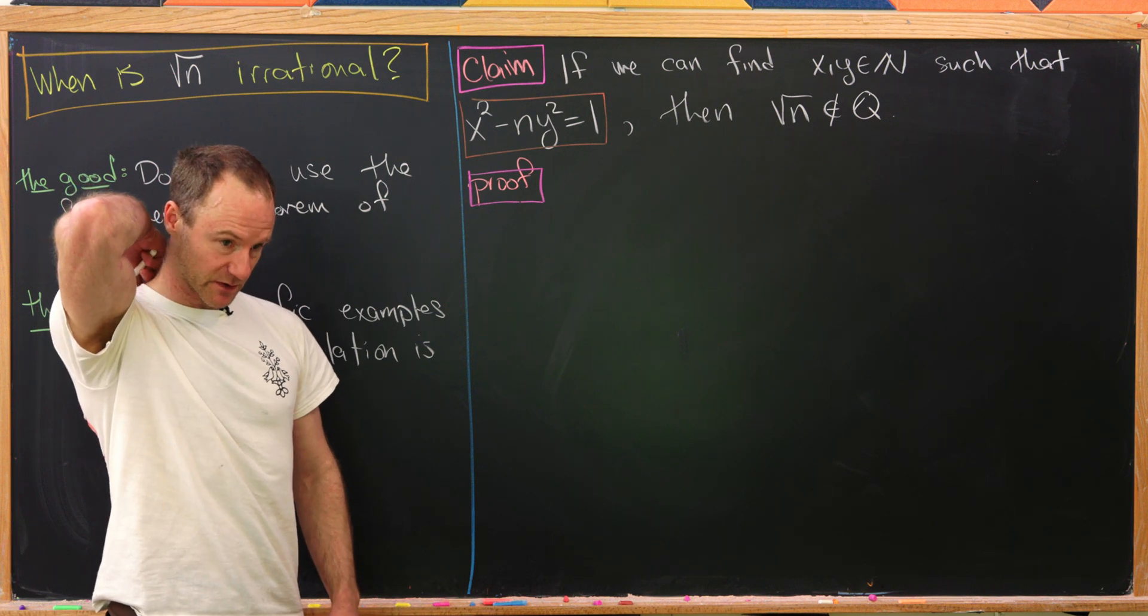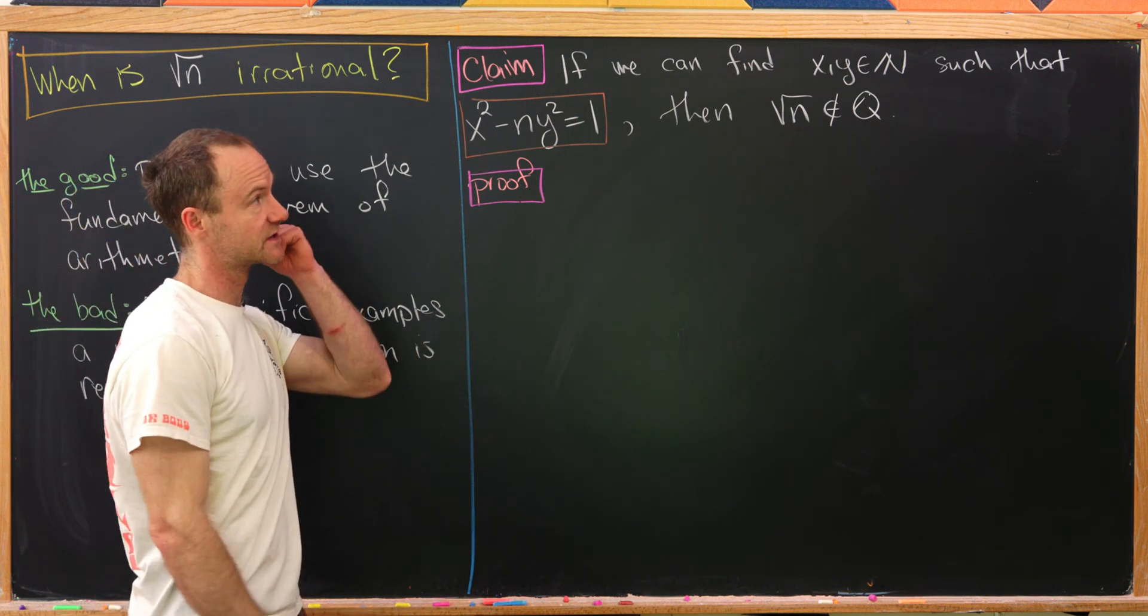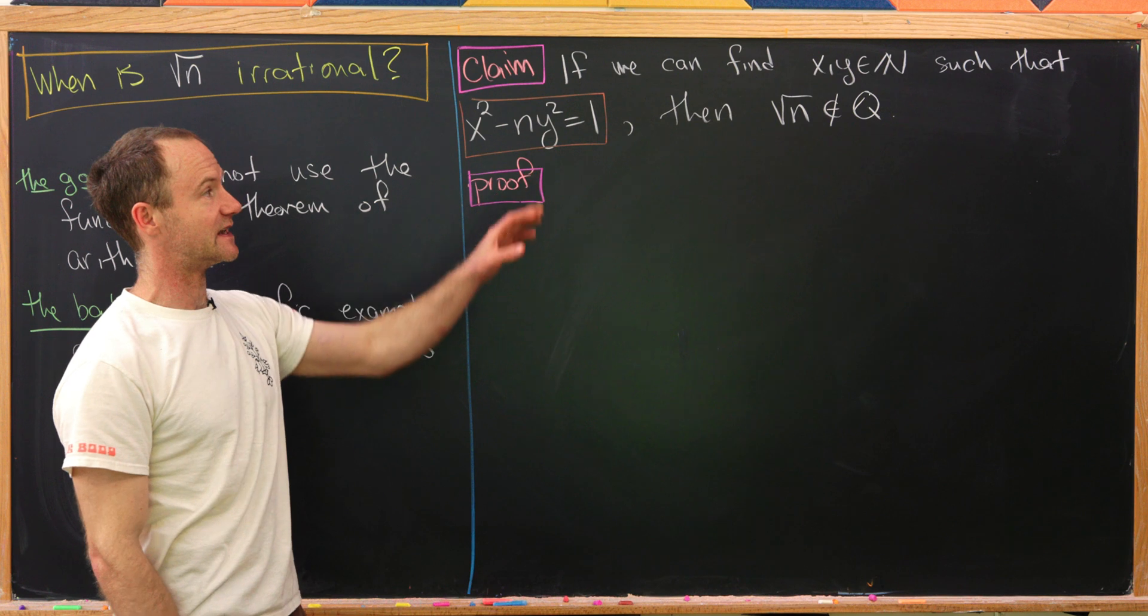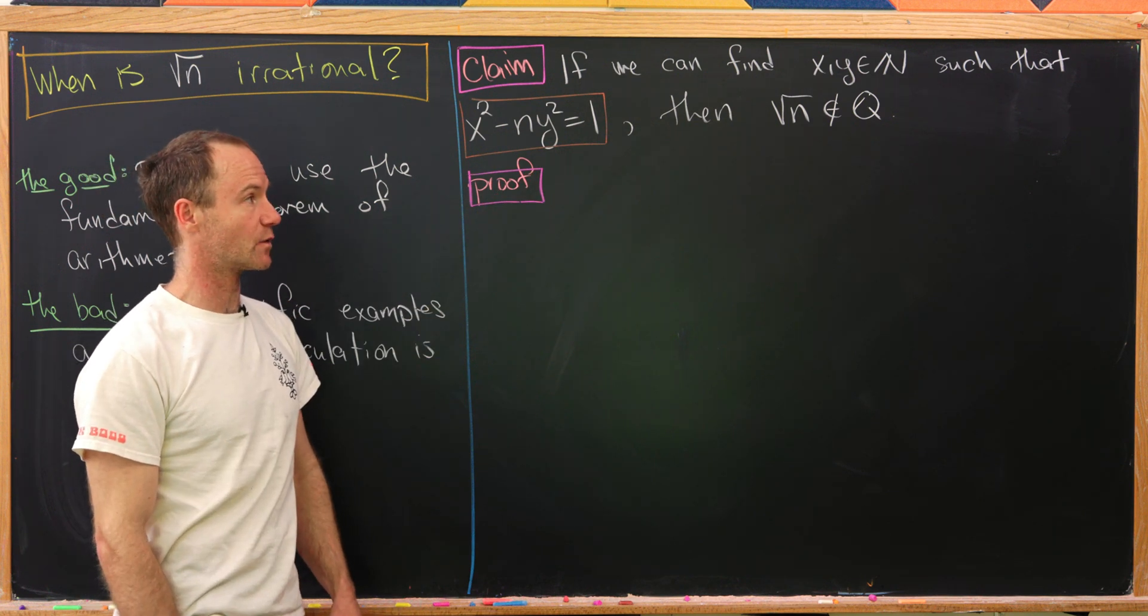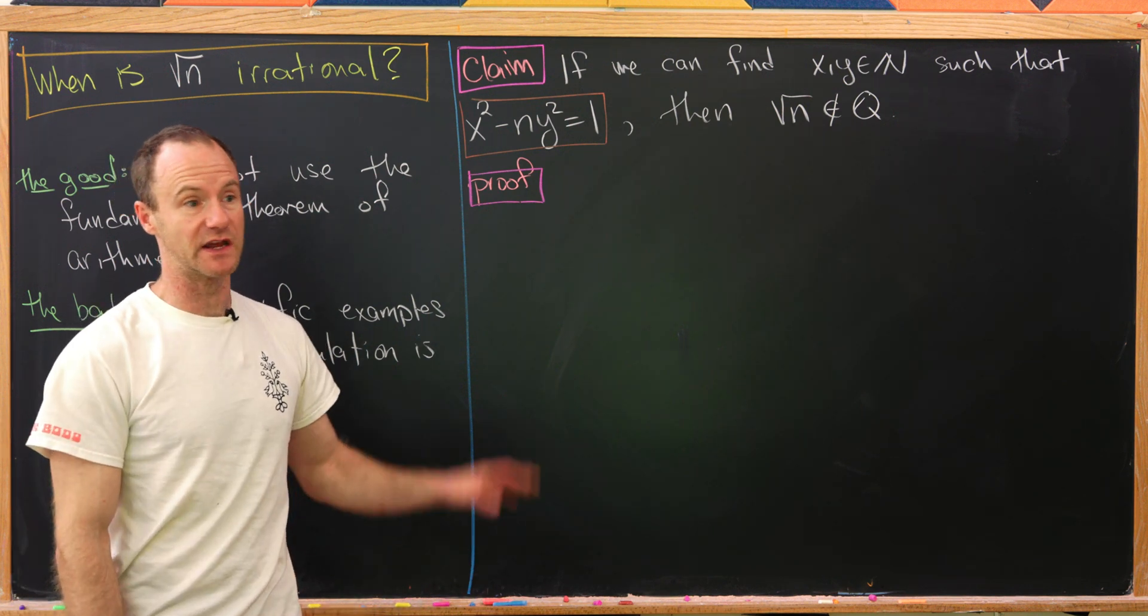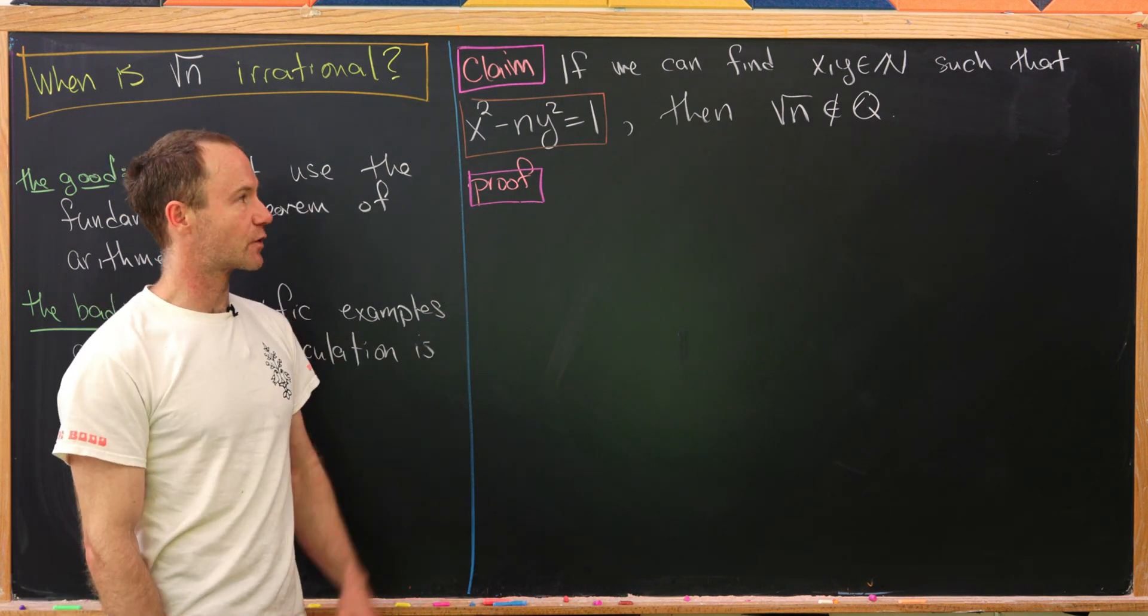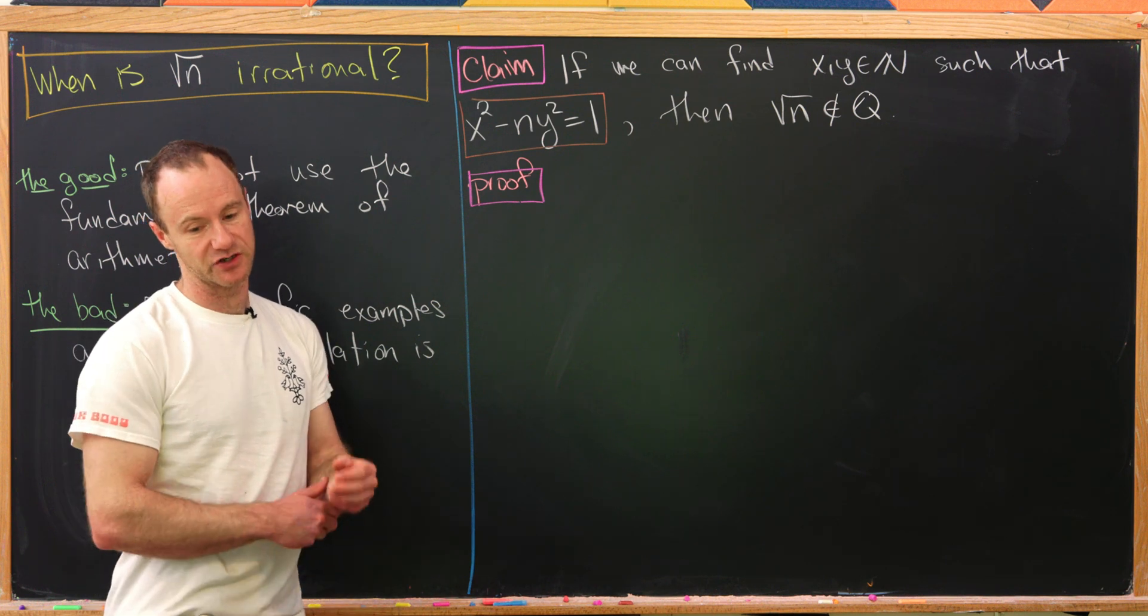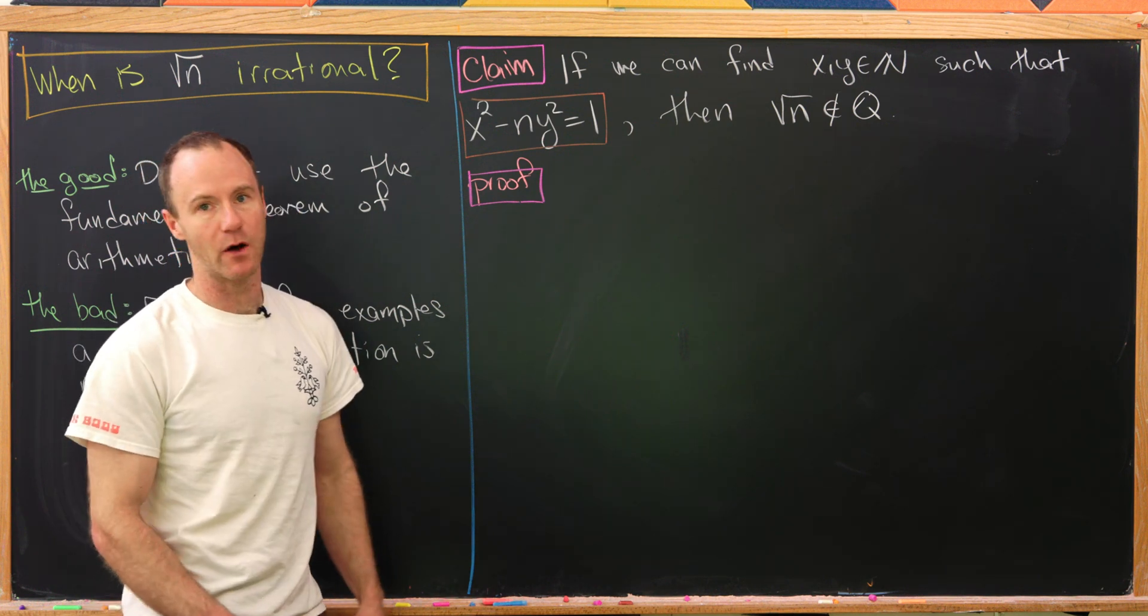All of this is going to be built out of the following result. If we can find natural numbers x and y such that x squared minus n times y squared equals 1, then the square root of n is irrational. So let's see how we'll do this.